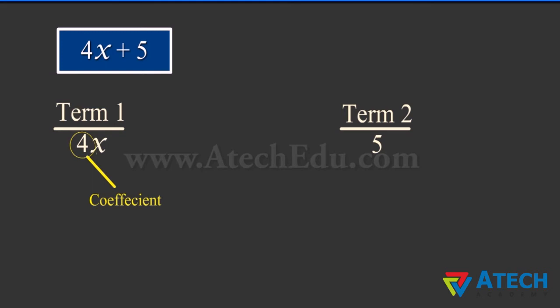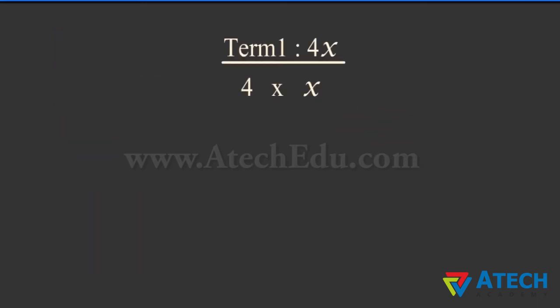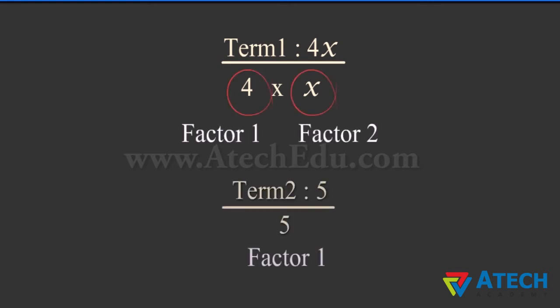The expression 4x plus 5 is made up of two terms, 4x and 5. Terms are added to form expressions. The numerical factor of a term is called its numerical coefficient or coefficient. The term 4x is the product of its factors 4 and x. The term 5 is made up of just one factor, i.e. 5.